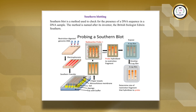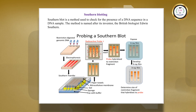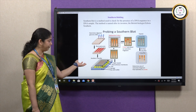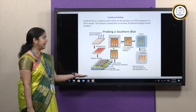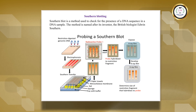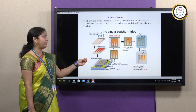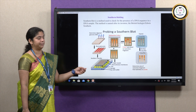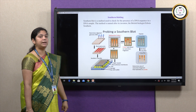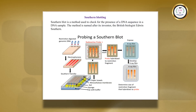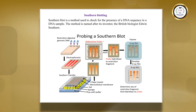In Southern blotting, the target genomic DNA is restriction digested, and the digested fragments are electrophoresed. Once electrophoresed, the gel is transferred to a nitrocellulose membrane, which is then probed with a radioactive probe. The excess probe is washed off, and only fragments bound to the target are visible when exposed to an X-ray film, confirming whether the target gene of interest is present.